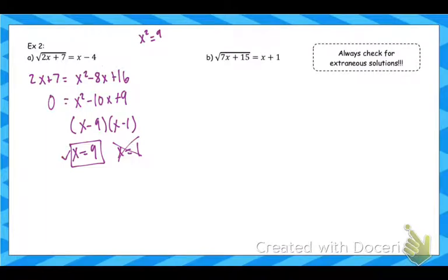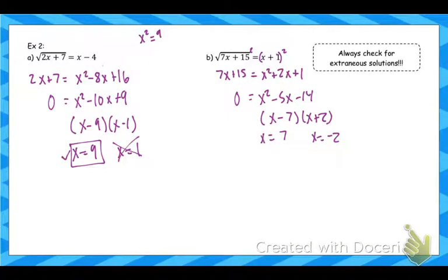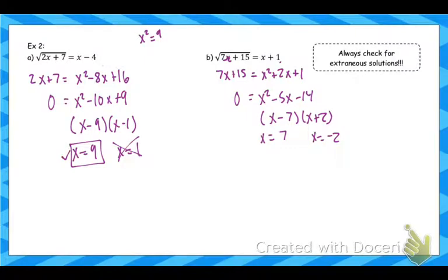Part b is very similar — pause the video and try it on your own if you feel comfortable. Squaring both sides and using square-double-square on the right gives a quadratic, so set it equal to 0 and factor, yielding possible answers x equals 7 and x equals negative 2. Plugging in 7: 49 plus 15 is 64, square root of 64 is 8, and 7 plus 1 is 8 — so 7 works. Plugging in negative 2: negative 14 plus 15 is 1, square root of 1 is 1, but negative 2 plus 1 is negative 1, so that answer does not work.